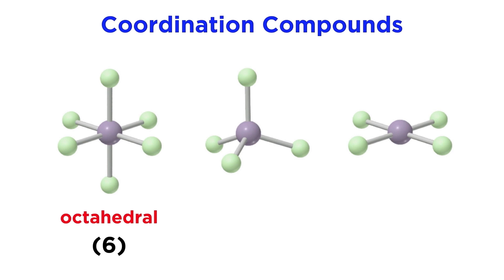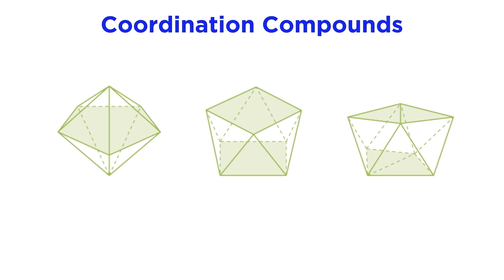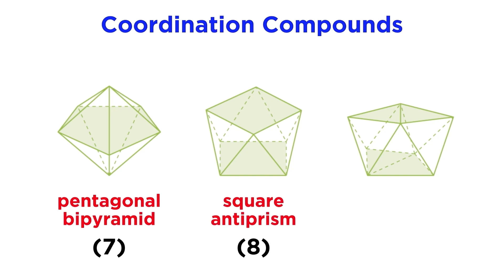These would be octahedral, for complexes with a coordination number of 6, as well as tetrahedral and square planar, both for complexes with a coordination number of 4. But we can have coordination numbers well above 6, and these will generate some interesting geometries, like pentagonal bipyramid, square antiprism, and dodecahedral.